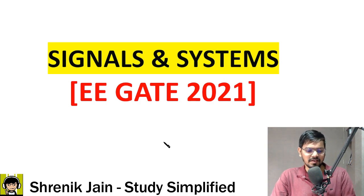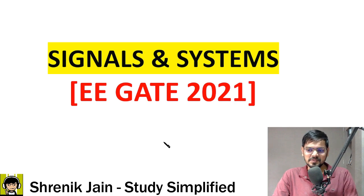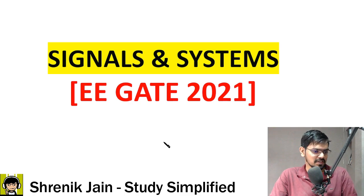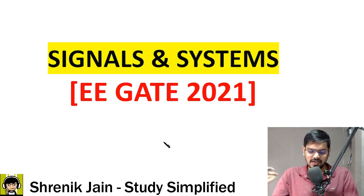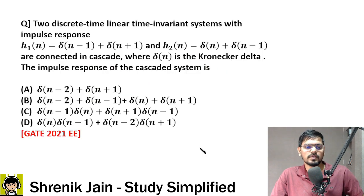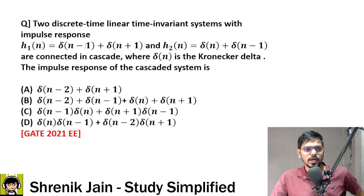We are live. Good morning everyone, welcome to the previous year paper solution class. Today we are going to solve GATE 2021 Electrical questions and the section is Signals and Systems. Let us start with the very first question — GATE 2021 Electrical question number one.